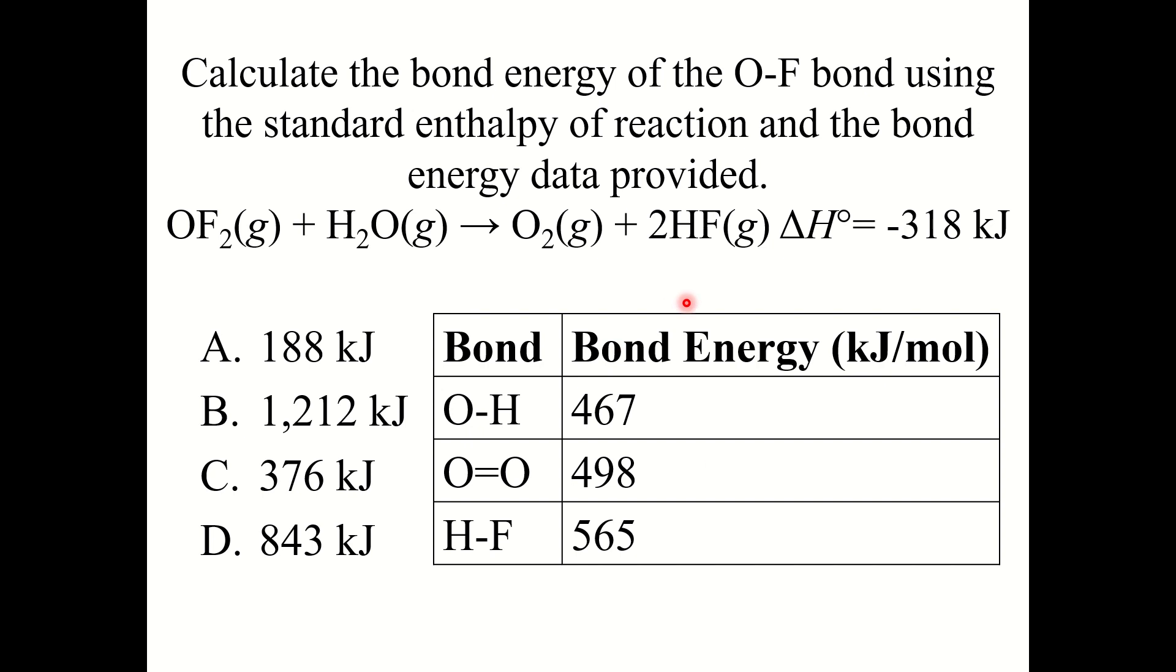Let's have you try a question. I do want to note this one is a little different, a little bit of a twist. Here you need to calculate the bond energy of the O–F bond using the standard enthalpy of reaction and the bond energy data provided. Here you are told what the delta H for this reaction is. You need to find the bond energy of the O–F bond. Draw the Lewis structures, set up the equation just like we did on the previous slide, but instead of solving for delta H, you are solving for the O–F bond energy.